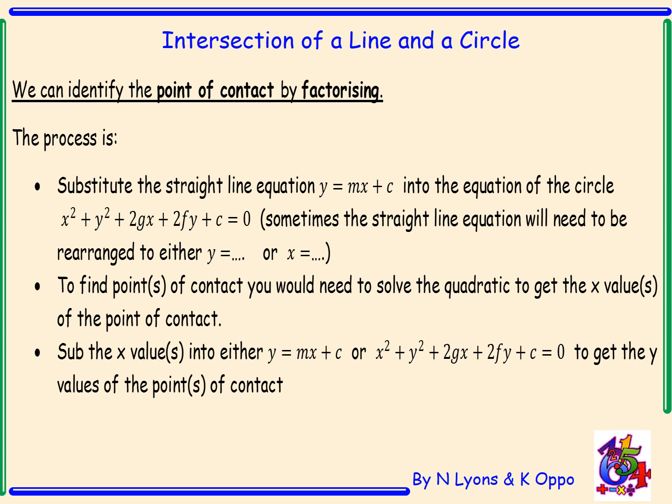We can also identify the point of contact by factorising the quadratic. We start the same process by substituting the straight line into the circle's equation. To find the points of contact we solve the quadratic — factorise and solve to get x values. Once we have the x values, we substitute these into the straight line to obtain the y values of contact. This will become much clearer when we go through two examples.